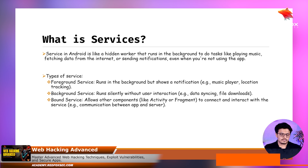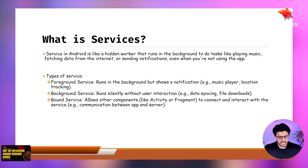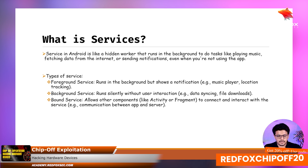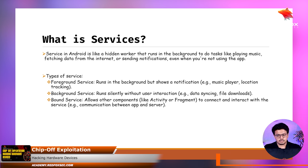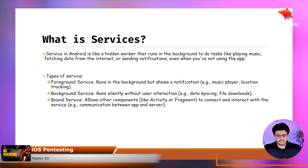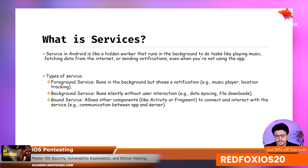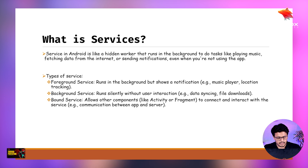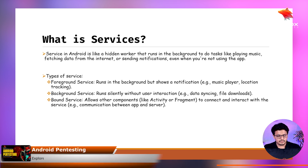There are three main types of services: foreground service, background service, and bound service. A foreground service — for example, when you open Spotify or any music app and start listening to songs, you get a notification at the top of your device showing what's playing. That is where the foreground service takes place.